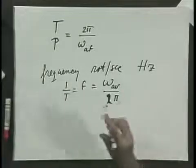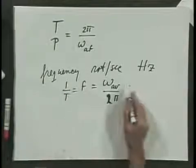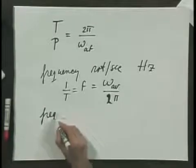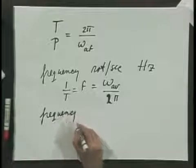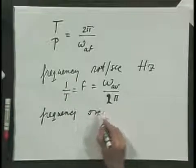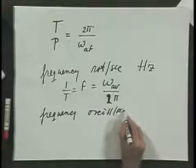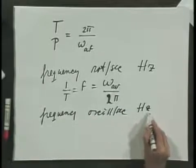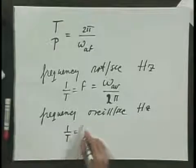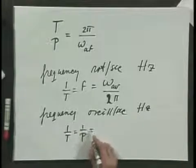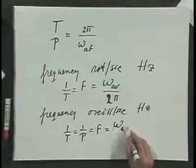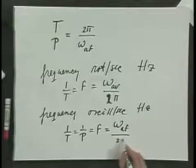We also talk about the frequency of a simple harmonic oscillator, in which case frequency means how many oscillations per second — how many cycles per second — also in hertz. That frequency, 1/T or 1/P, which we also call f, equals the angular frequency divided by 2π.